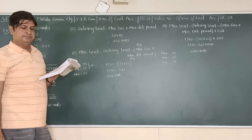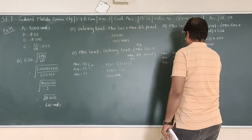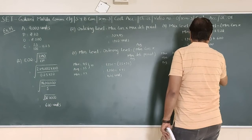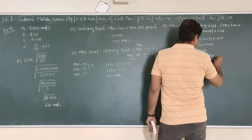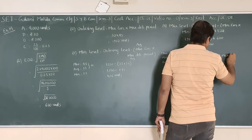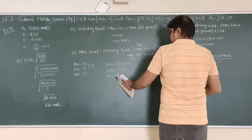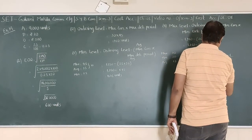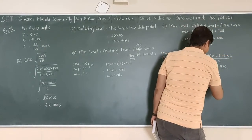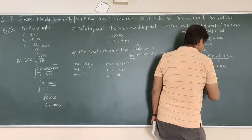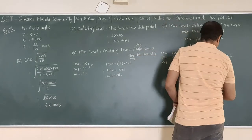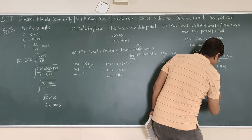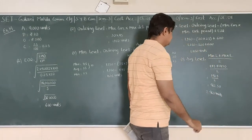Now we are asked for the average level. Average level equals minimum level plus maximum level divided by 2. So that is 475 plus 1,450 divided by 2, giving 1,925 divided by 2, which equals 962.5. Since there's no decimal, we round up to 963 units.